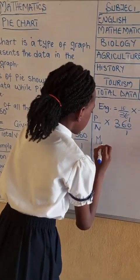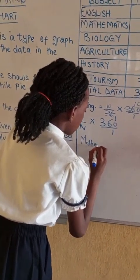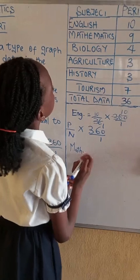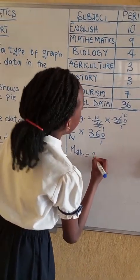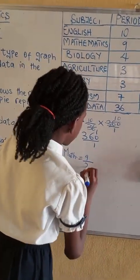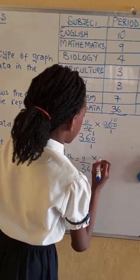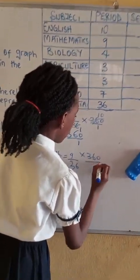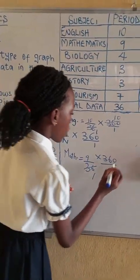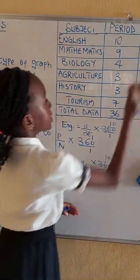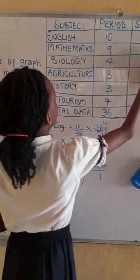Mathematics equals to 9 over 36 times 360 over 1. 36 here 1 and 10. So 9 times 10 is 90 degrees.